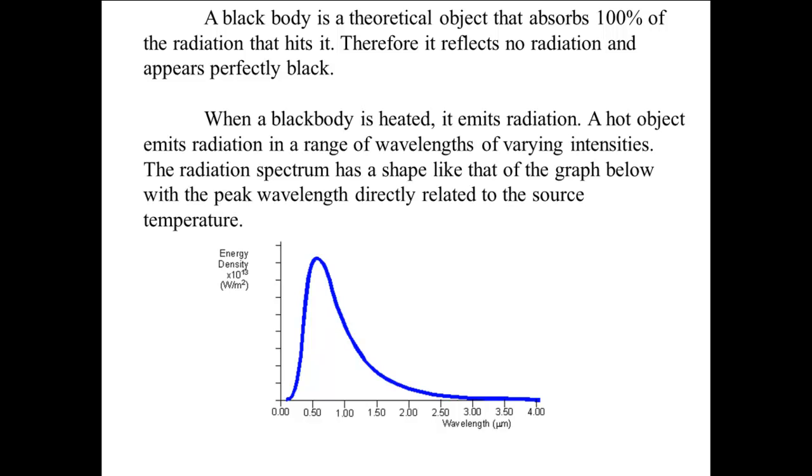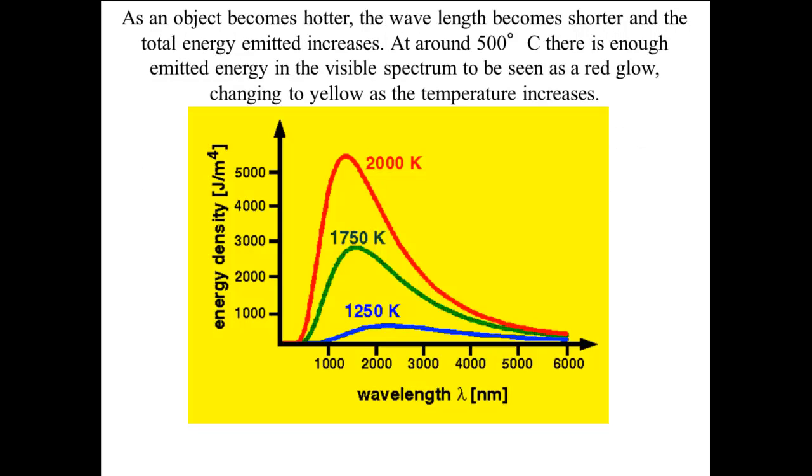When a black body is heated, it emits radiation. A hot object emits radiation in a range of wavelengths of varying intensities. The radiation spectrum has a shape like that of the graph below, with the peak wavelength directly related to the source temperature. The spectrum of light given off by a black body is dependent only on the temperature of the body, not on what the body is. The temperature of a heated object can be determined by its color.